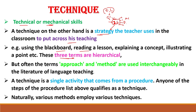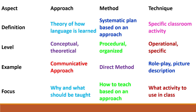These three terms — approach, method, and technique — are hierarchical. But often the terms approach and method are used interchangeably. A technique is a single activity that comes from a procedure. Technique is whatever single strategy or activity you are using in one period. Any one of the steps of the procedure list above qualifies as a technique. Various methods employ various techniques.